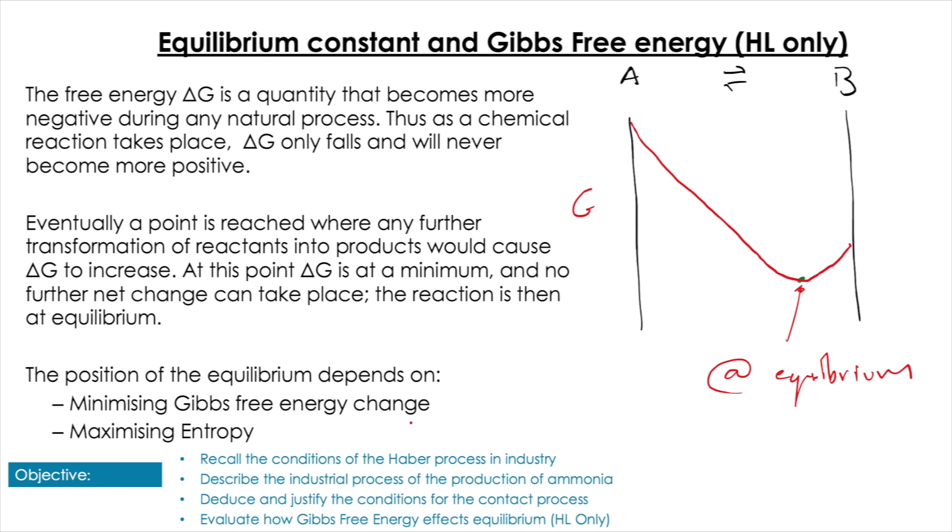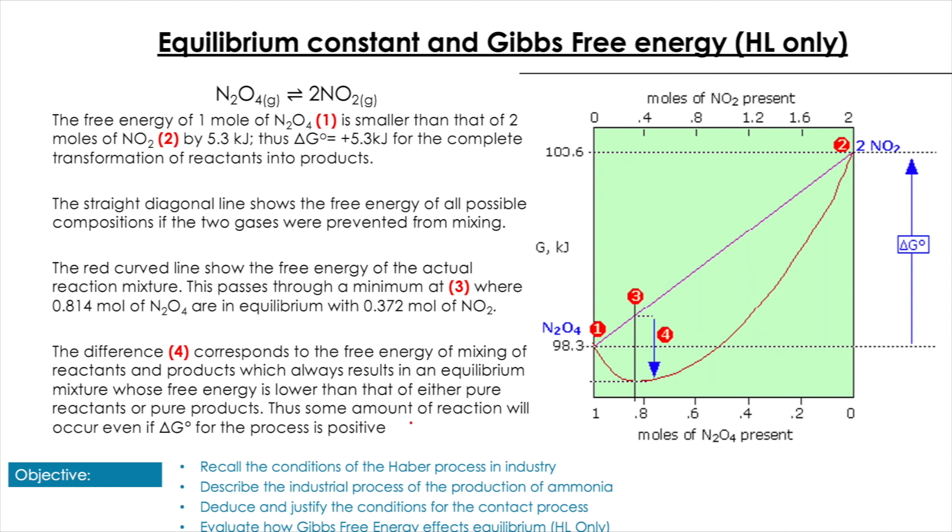So you can see here I grabbed some data to illustrate this online. We've got a reaction: N2O4 going to 2NO2. So on the left-hand side of this graph is 100% N2O4, and on the right-hand side we've got NO2. So the line joining these two—that straight line—shows the free energy of the possible compositions if the two gases were prevented from mixing. We'll have a look at this in Unit 9 when we talk about liquid junction potentials for voltaic cells as well, but don't worry about it too much.